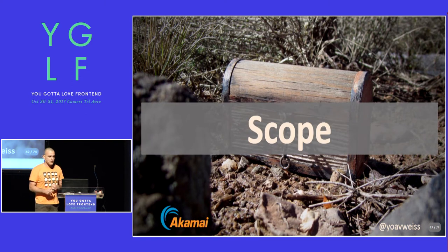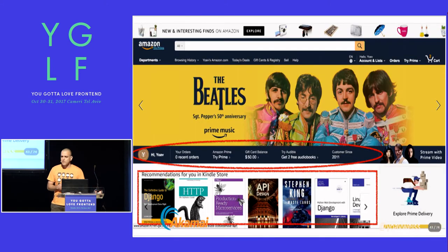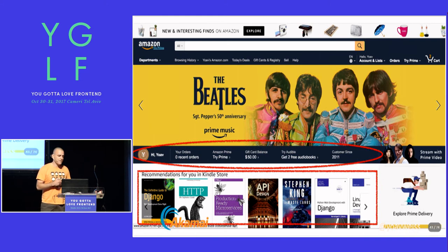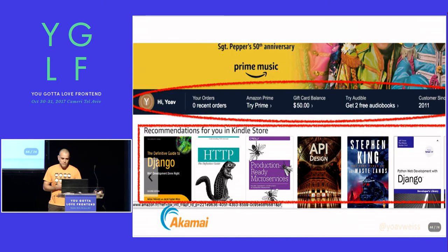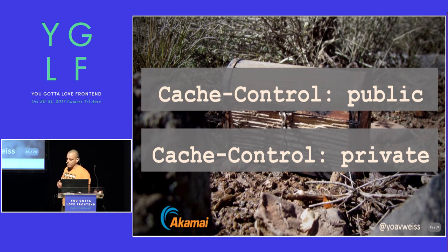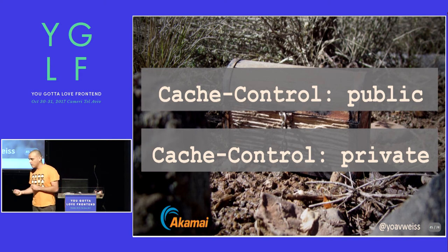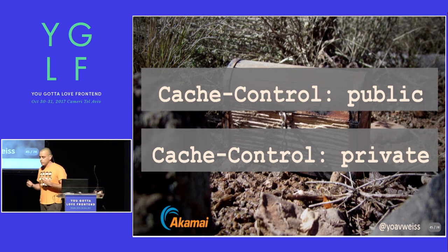Another aspect of HTTP caching directives is scope — who can cache a given resource. Some resources are fine to cache in the browser for a particular user, but would be a privacy breach if cached publicly on the network because they can reveal private information — potentially embarrassing information, such as that some users are Python users, for example. We can control that scope using Cache-Control: private, which tells caches this resource should not be cached as a public resource, or Cache-Control: public, which means exactly the opposite.